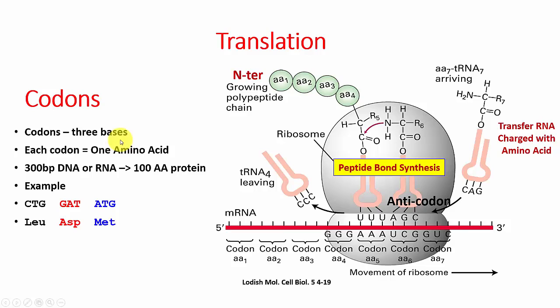Here is the molecular machine that reads the messenger RNA. There are codons on that, and those codons are just three letters — such as A, T, G or G, A, T — that code for specific amino acids. Each codon codes for a certain amino acid, and these get stuck together to make beautiful proteins like hemoglobin.